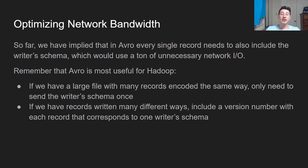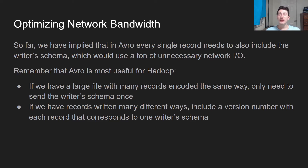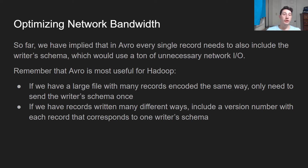So how do we actually optimize network bandwidth? With Avro, in order to decode a message you need both the writer schema and the reader schema, which is problematic if we're sending all of these messages over the network — we don't want to also include the writer schema every time, as that can take up a ton of space. But keep in mind that a lot of the time what you're doing with Avro is dealing with Hadoop files — you probably have one big file with all of these records encoded in the same way. So generally speaking, you can just send that writer schema over one time and use it for all of those different records. If you have a bunch of records written in all different ways, you can include a version number with each record that corresponds to the writer schema, and then the decoding node can pull the correct writer schema using that version number every time it's decoding a message — so you only have to send over all versions of the writer schema once.